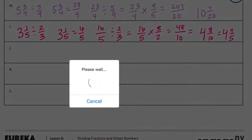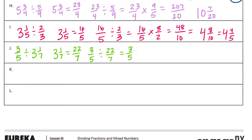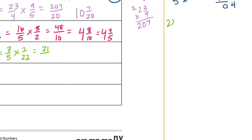Part J: three-fifths divided by three and one-seventh. Three and one-seventh equals twenty-two sevenths. Three-fifths divided by twenty-two sevenths — invert and multiply: three-fifths times seven twenty-seconds. Three times seven is twenty-one. Five times twenty-two is one hundred ten. So twenty-one one-hundred-tenths, and we cannot reduce that.